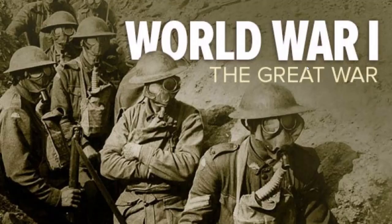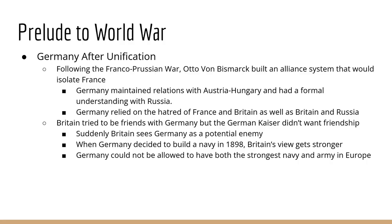World War I is also known as the Great War, and we need to talk about what's going on in Europe in the early 1900s up to 1914. After the Franco-Prussian War, Otto von Bismarck, who was the architect of a united Germany, was convinced that building up the German military was too dangerous. So he tried to build up an alliance system that would isolate France, and by isolating France, he thought he could prevent war. He maintained friendly relations with Austria-Hungary and had a formal understanding with Russia.